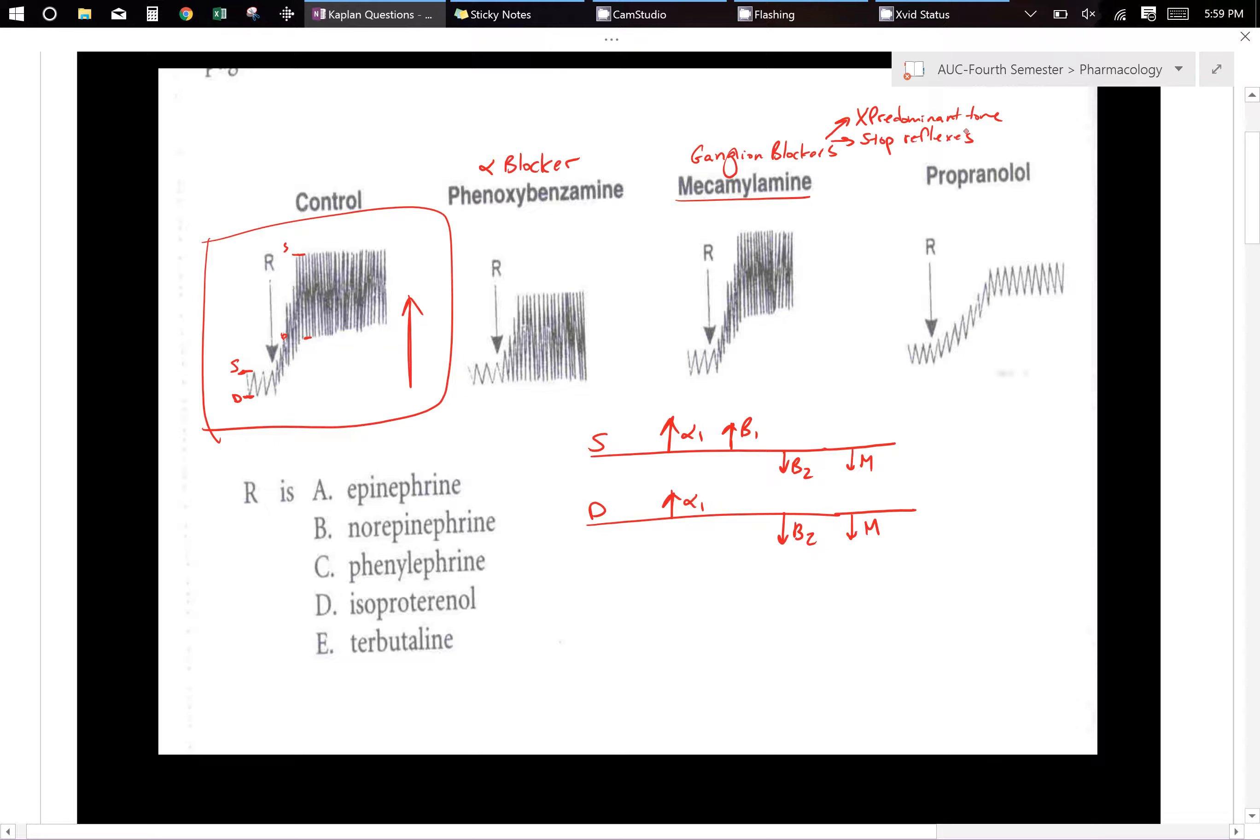And then finally we have propranolol, which is going to be a beta blocker. Beta 1, beta 2, both. And you can figure that out from the allol.